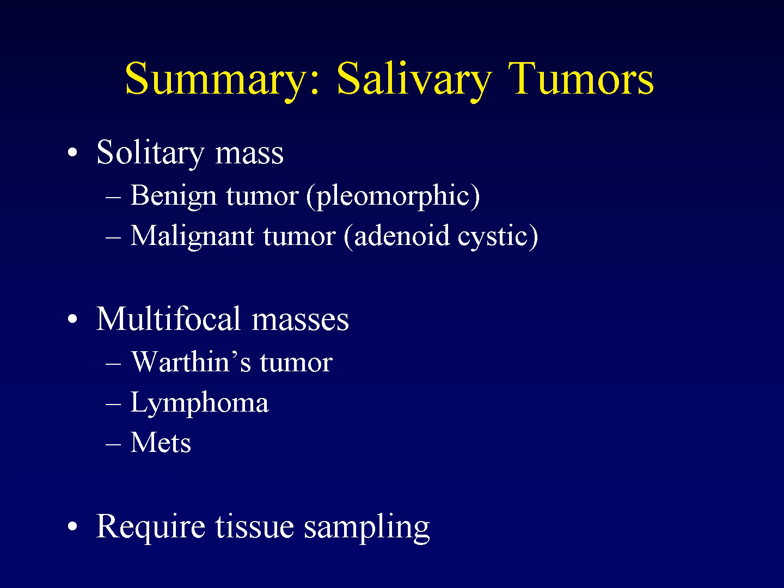If confronted with multifocal masses, consider Warthin's tumor, particularly in an elderly male who smokes — the classic demographic — but also consider lymphoma, either primary or secondary, and metastatic disease such as from scalp primaries. The bottom line is that it is very difficult to make a specific diagnosis when dealing with salivary masses. Thus, these almost always require tissue sampling, either as fine needle aspiration or as excisional biopsy with or without a neck dissection — the difference depending on surgeon and institutional preferences.